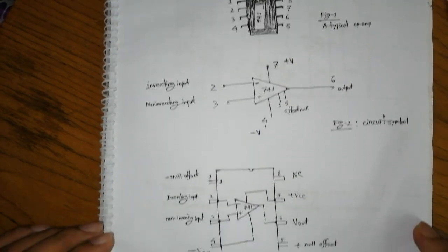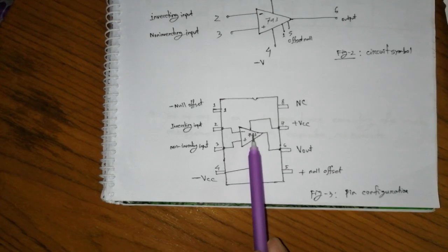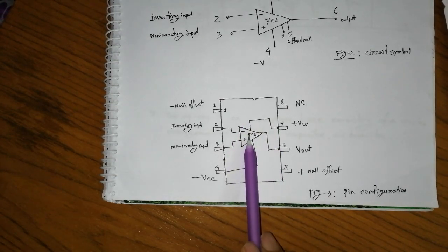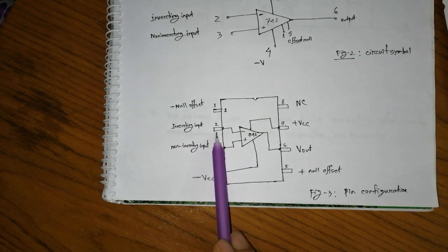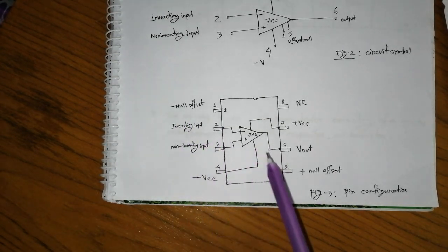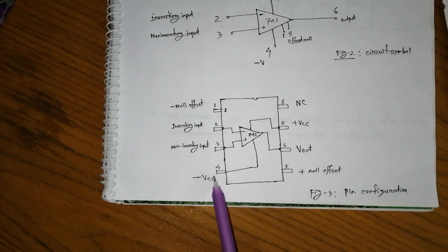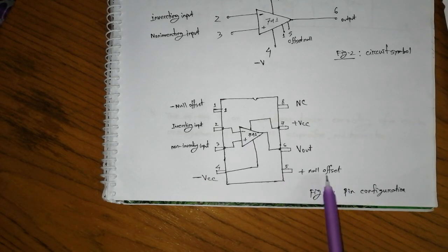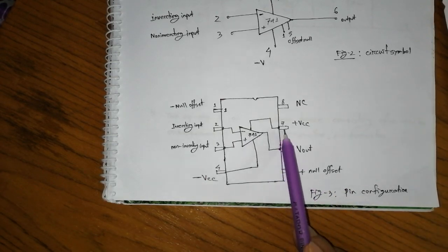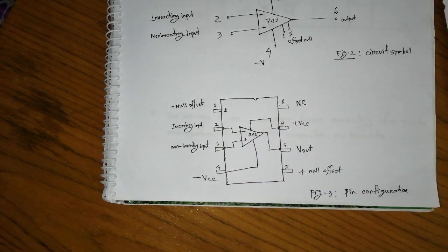Now we will see the PIN configuration of the recommended IC. Pin 1 is the negative null offset. Pin 2 is the inverting input or minus point. Pin 3 is the non-inverting input or plus point. Pin 4 is minus VCC. Pin 5 is the plus null offset. Pin 6 is the output. Pin 7 is plus VCC and pin 8 is not connected. This is the PIN diagram.